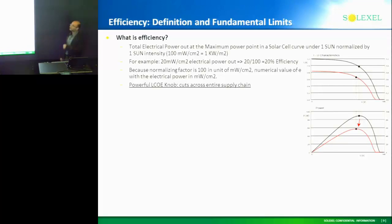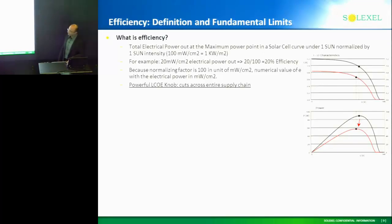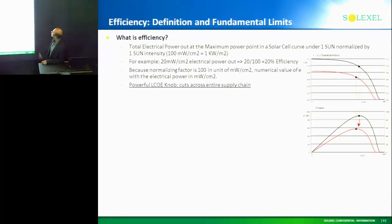I already talked about the powerful LCOE knob because it cuts across the entire supply chain. So this is a typical IV curve of a solar cell on the top.